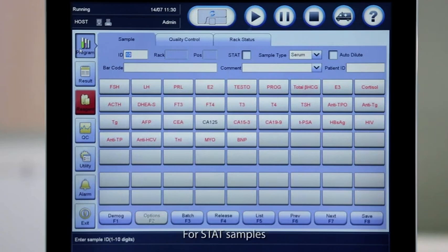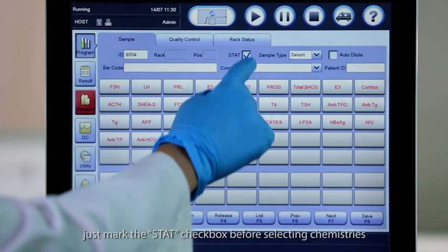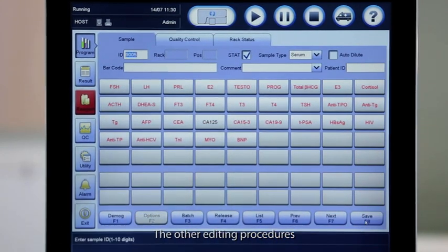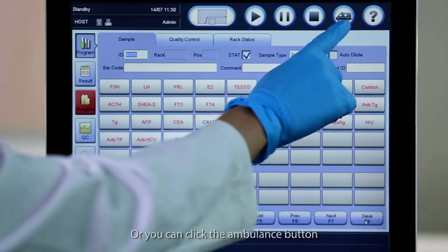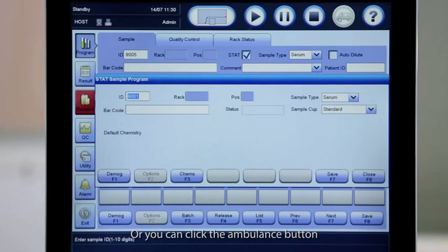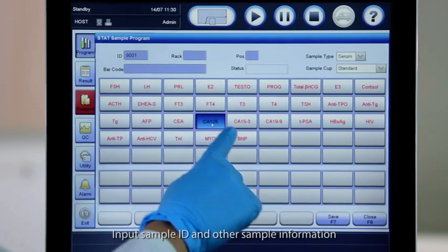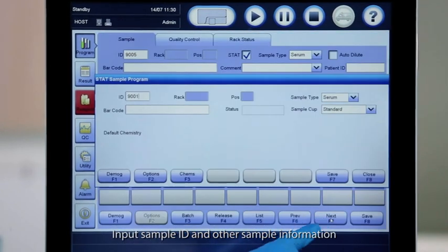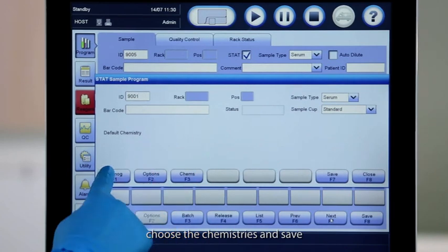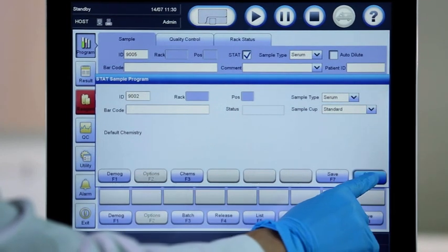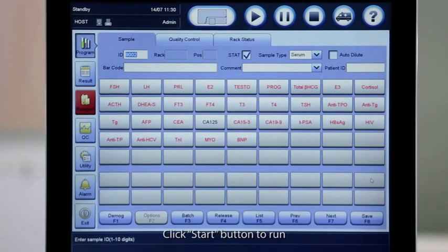For stat samples, just mark the stat checkbox before selecting Chemistries. The other editing procedures are the same as running routine samples. Or you can click the Ambulance button to edit stat samples. Input sample ID and other sample information, choose the chemistries and save. Load samples and place the rack in stat lane. Click Start button to run.